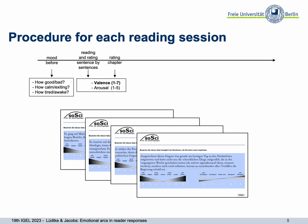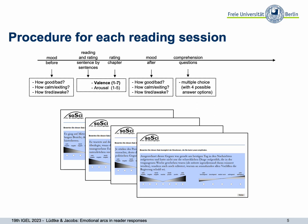For the rest of the sentences, participants rated valence and arousal again and again until the end of the chapter. After reading the chapter, we presented again the valence and the arousal scale, but this time participants should indicate valence and arousal for the entire chapter. Afterwards, we presented again the mood questionnaire, some comprehension questions, and a questionnaire about their reading experience. We asked for transportation, emotional involvement, and things like that. Then there was a possibility for a break, and the reader could decide to go on after an hour or after a day.